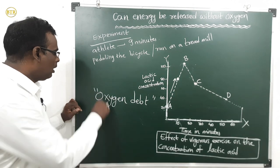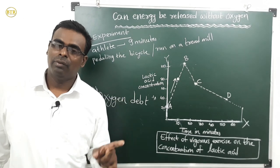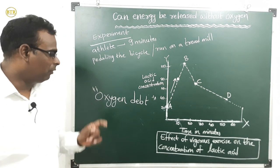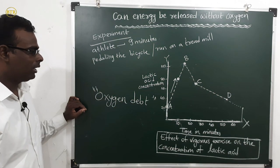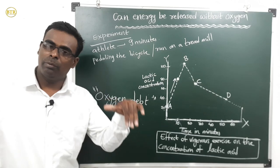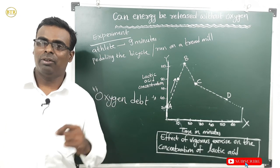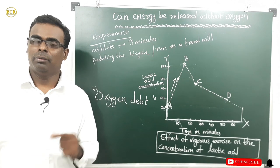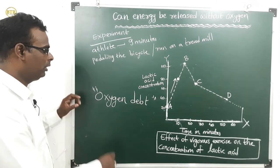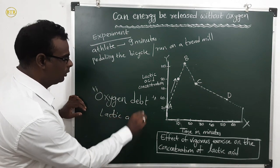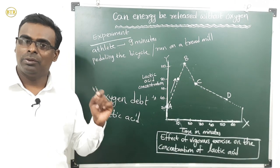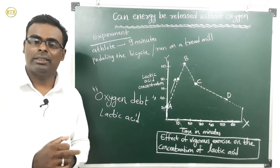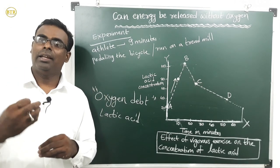To remove the oxygen debt, the person has to take rest. When taking rest, a lot of oxygen is taken into the body, and lactic acid is removed. During oxygen debt, anaerobic respiration takes place in the body — in the absence of oxygen, the body performs anaerobic respiration, which produces lactic acid. By taking rest and breathing in more oxygen, the lactic acid is removed and energy is produced.